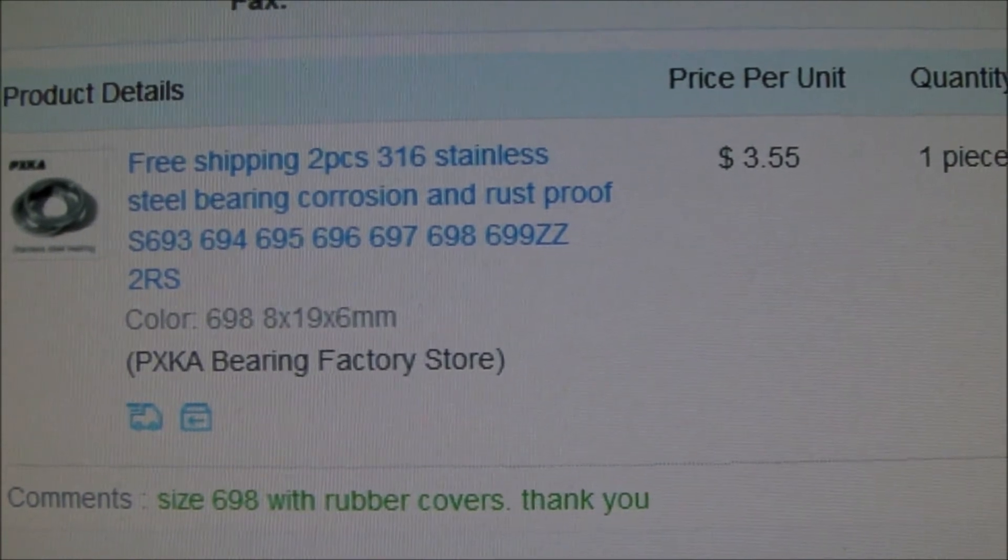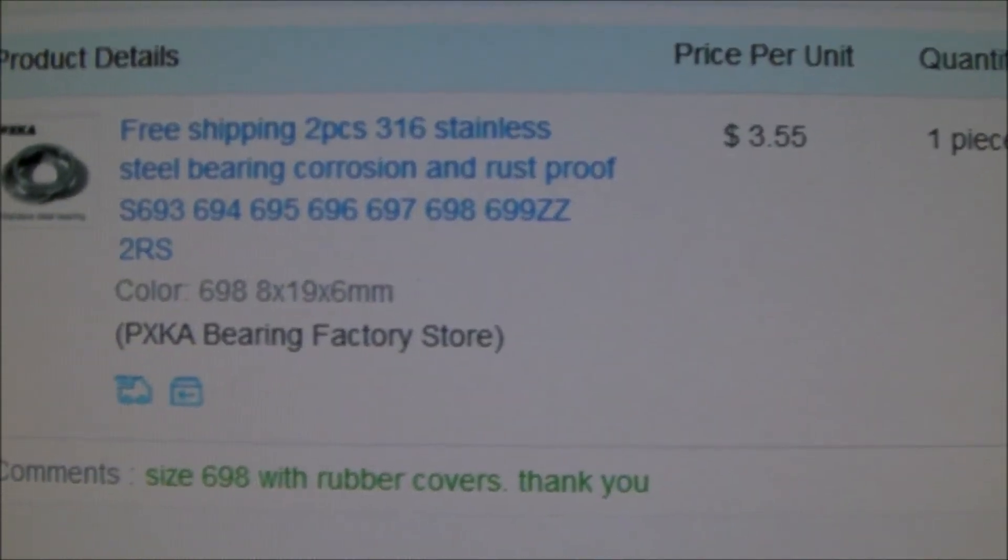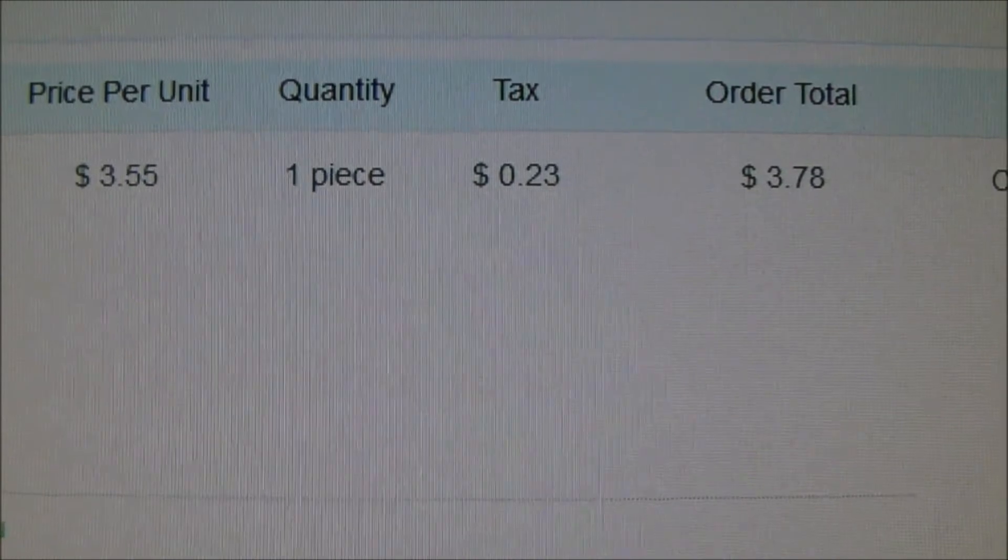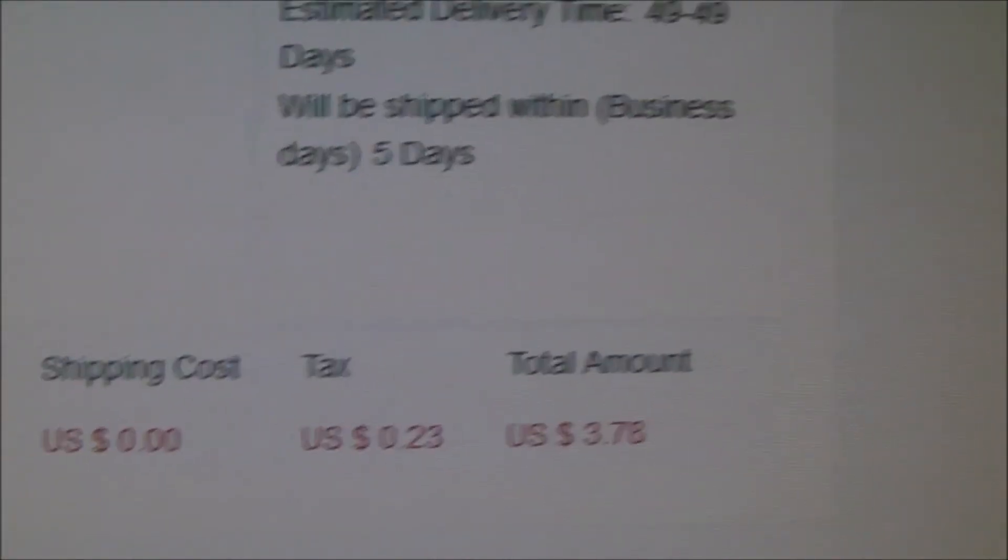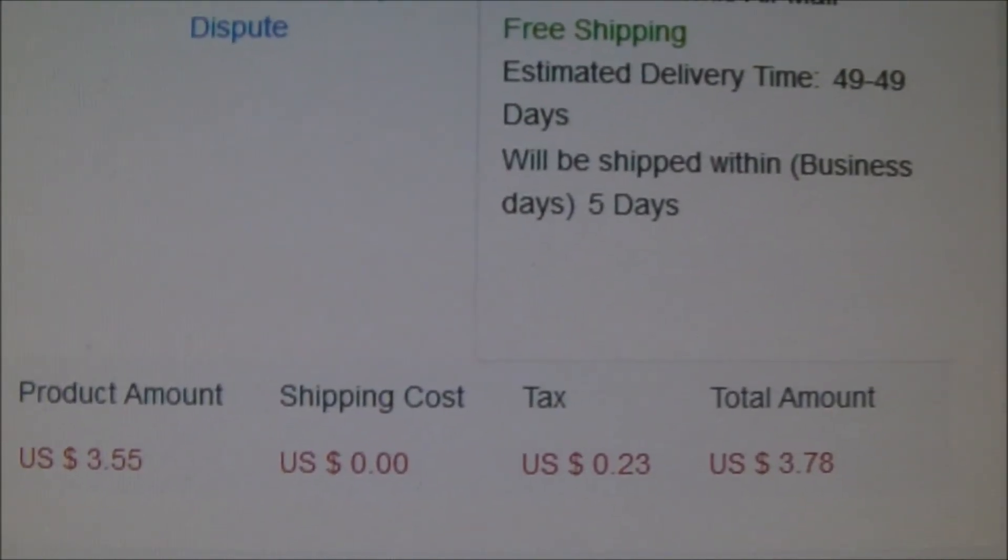These are the bearings I bought. They're marked as 698s which are 8 by 19 by 6 millimeter. I paid $3.55 for a pair of them plus 23 cents tax and free shipping. On top of that I got my TopCashback discount.